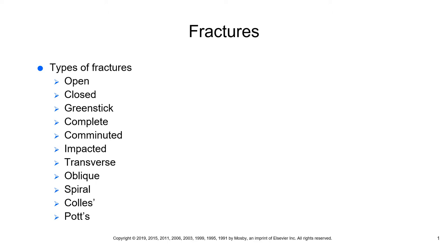When we think about comminuted fractures, we think about crush injuries — someone who has been in an accident involving crushing. An impacted fracture, sometimes called a telescoping fracture, is where one or more fragments are forcibly wedged into another bone fragment. This can actually cause shortening of the extremity in long bones.